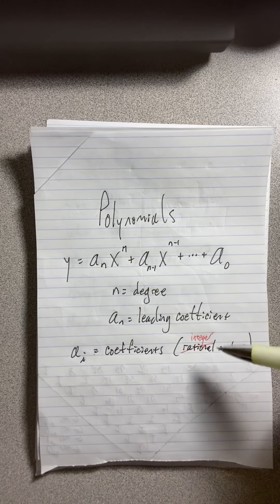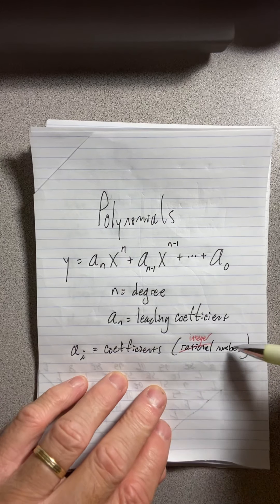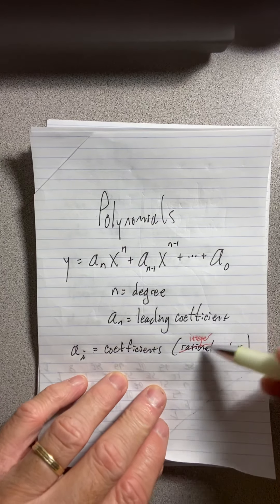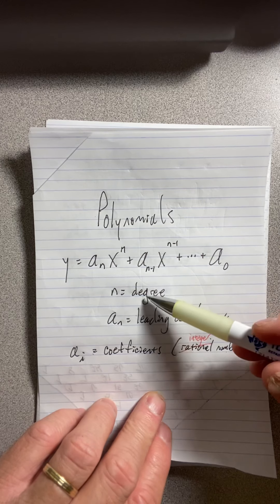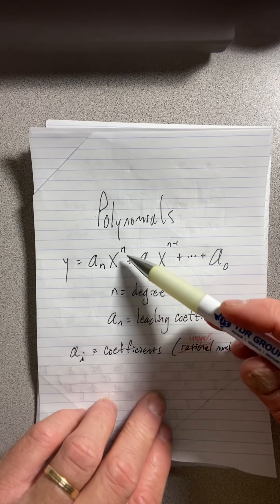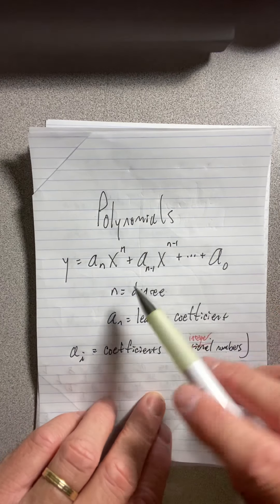Polynomials are functions that look like this, where the coefficients, these are the coefficients, are rational numbers, but we're going to deal just probably with integer numbers. So these are integers. And this highest power on x, by the way, these are also whole numbers, n minus 1 and so forth, down to where you don't have an exponent.